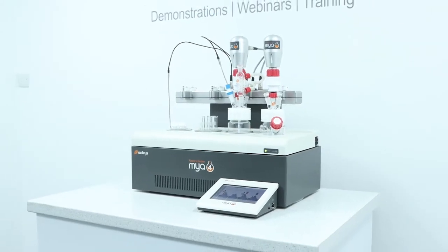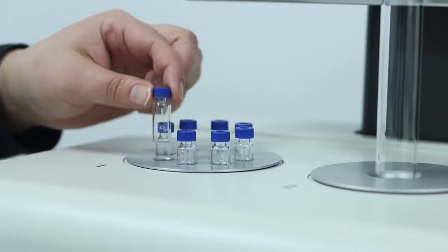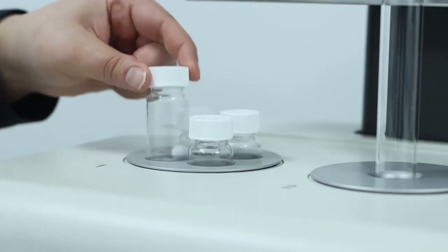The Maia 4 reaction station accommodates a wide range of glassware, including a variety of tubes and vials, such as HPLC vials and scintillation vials.